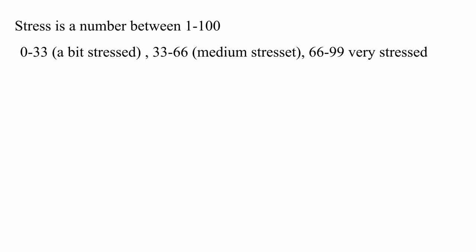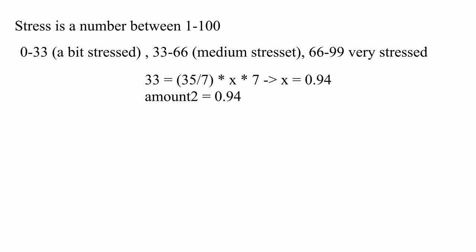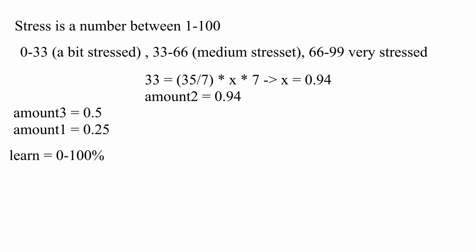So this is how I did it. The stress in the program is a number between 1 and 100. I concluded that between 0 and 33 means the student is mildly stressed, between 33 and 66 is medium stressed, and 66 to 100 is very stressed. In summary, I used an equation to find my stress amount. I set the de-stress amount to 0.5, since it's easier to get stress than to avoid it. I set the final score amount to 0.25, since through testing it seemed to give the best results. The ability to learn ranges between 0 and 100, and the ability to stress and de-stress is between 0 and 60.